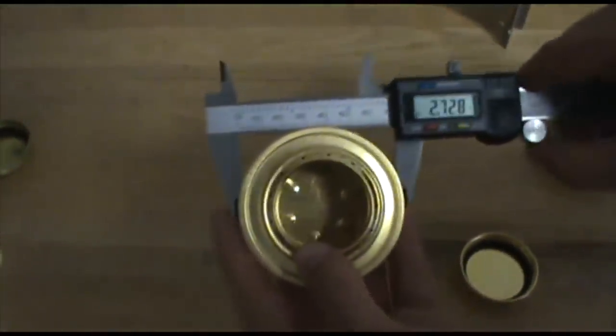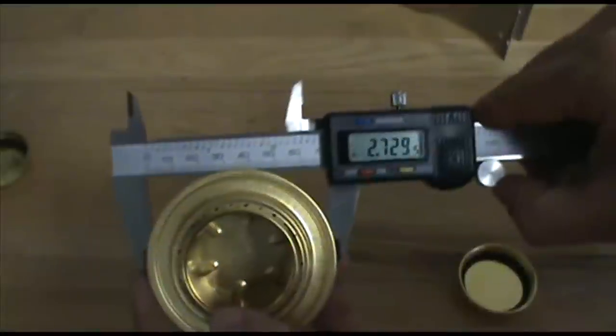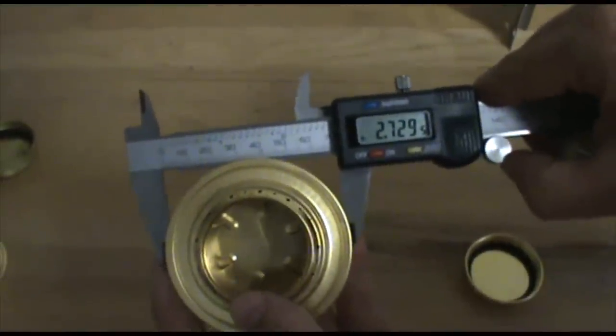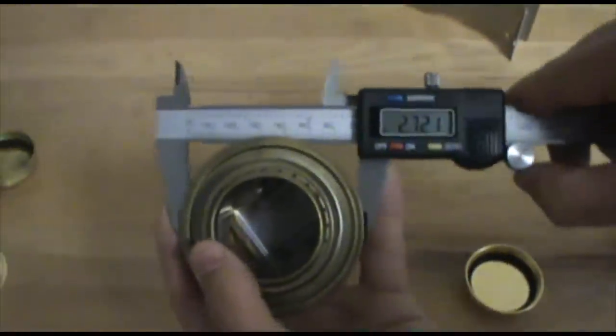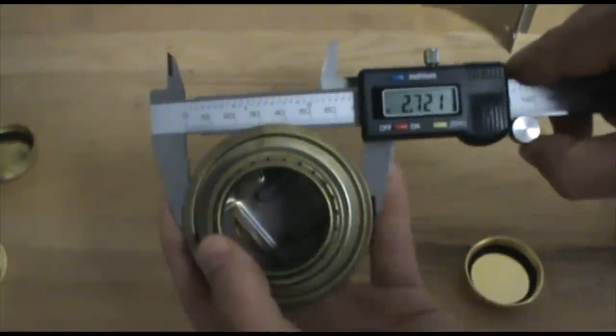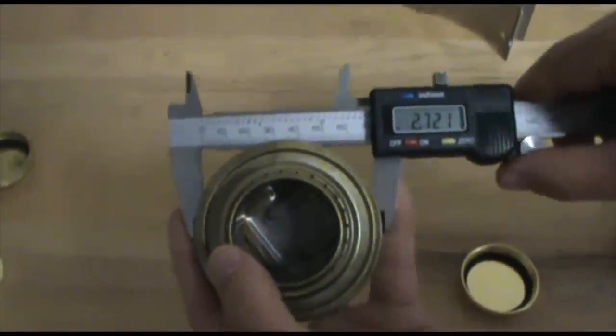The outer diameter of the base on the Esbit is 2.73 inches. For the Trangia, 2.72 inches, basically the same.